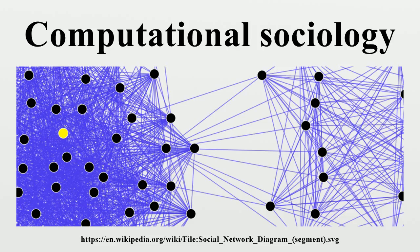Computational sociology develops and tests theories of complex social processes through bottom-up modeling of social interactions. It involves the understanding of social agents, the interaction among these agents, and the effect of these interactions on the social aggregate.